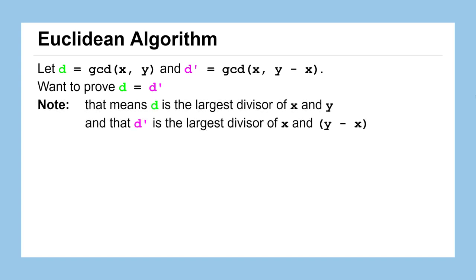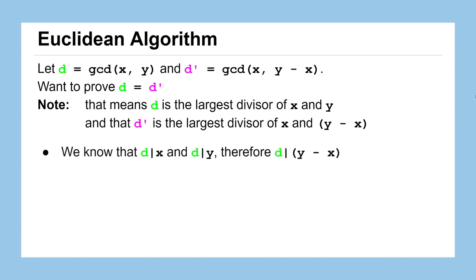The proof hinges on two statements. Since d is the greatest common divisor of x and y, d must divide both x and y. And as we just showed, that means d must also divide the difference y minus x. So d is a divisor of both x and y minus x. But d prime is already the largest divisor of those two numbers, so d must be less than or equal to d prime.